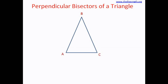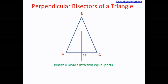Let's see what perpendicular bisectors of a triangle are. Here is a triangle, triangle ABC. Now first of all, what does bisect mean? Bisect means divide into two equal parts. That means a bisector is something that is going to divide something into two equal parts.